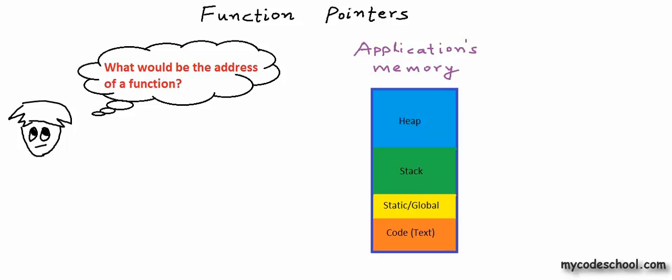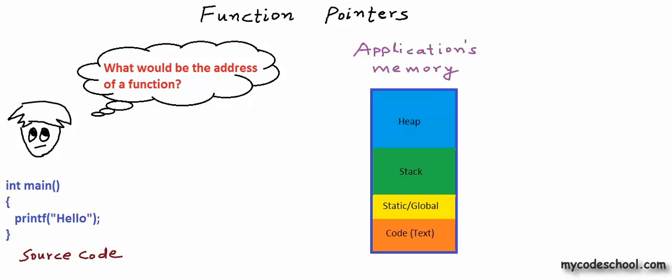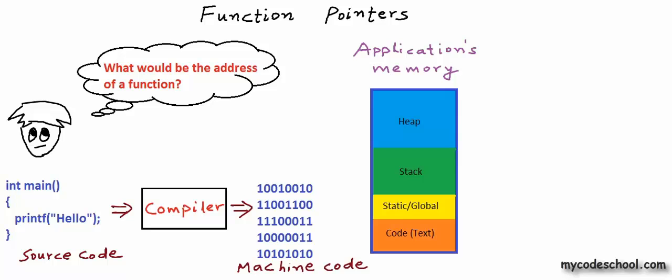A program is basically a set or sequence of instructions that you would give to the computer to perform a task. We can write our program in a high-level language like C or C++, but at the lowest level in its architecture, the computer understands and executes only binary. Any instruction that has to be executed by the computer has to be encoded in binary — of course there will be some rules for encoding. So what we do is we write our program in a high-level language like C or C++ and pass it to a program called a compiler, which generates what we call machine code or executable code — instructions encoded in binary.